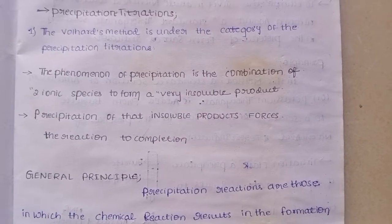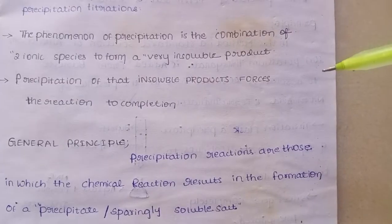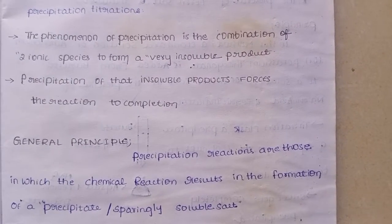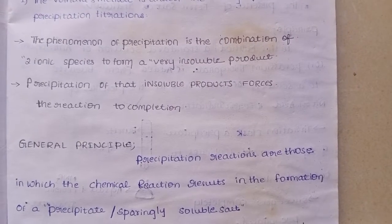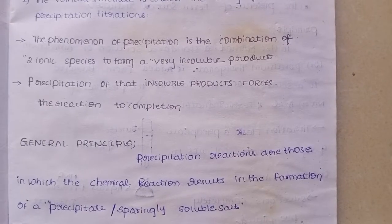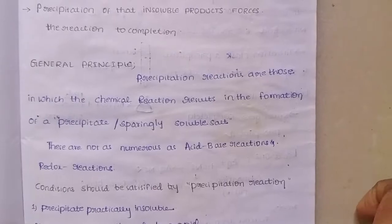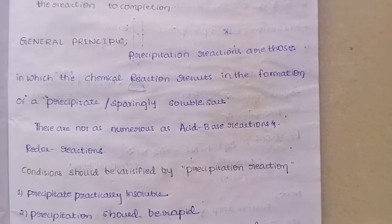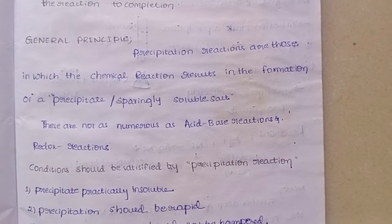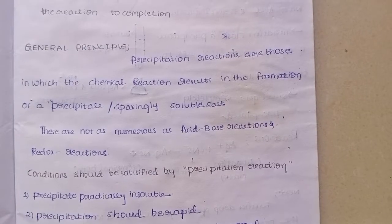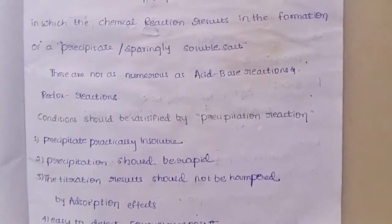The precipitation of the insoluble product forces the reaction to go to completion. If we combine two ionic species to form a very insoluble product, the precipitation reaction is formed and the reaction goes to completion. Precipitation reactions are those in which the chemical reaction results in the formation of a precipitate or sparingly soluble salt.